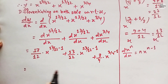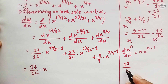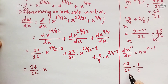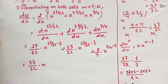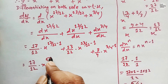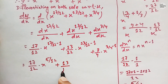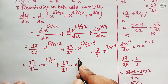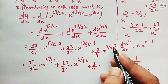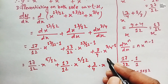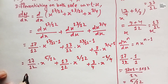On doing the subtraction: 17 upon 12 minus 1 — taking LCM of 12 and 1 gives 12, so 17 minus 12 equals 5, giving x to the power 5 upon 12. Similarly 13 upon 12 minus 1 gives 1 upon 12, so we have x to the power 1 upon 12. And 3 by 4 minus 1 gives 3 minus 4 over 4, which is minus 1 upon 4, so x to the power minus 1 upon 4.